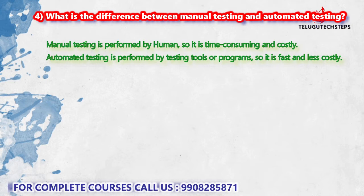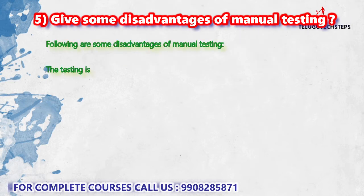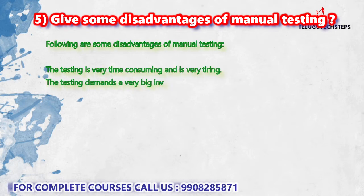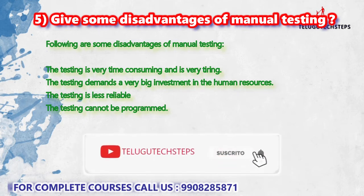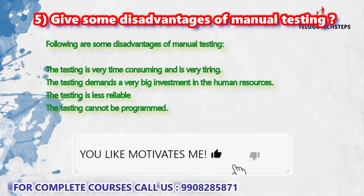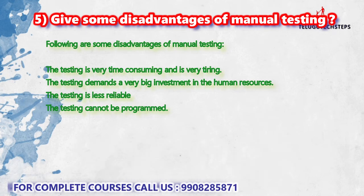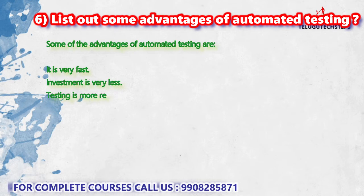What are the disadvantages of manual testing? Manual testing is very time-consuming and requires very high effort. Testing demands a very big investment in human resources. There is a high chance of errors and testing cannot be programmed — it is time-consuming and low performance. The advantages of automated testing are: it is fast, less costly, more reliable, and testing can be performed in a programmatic way.